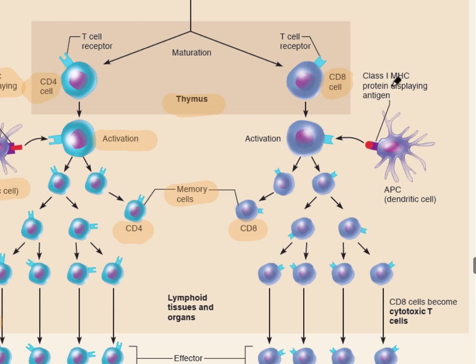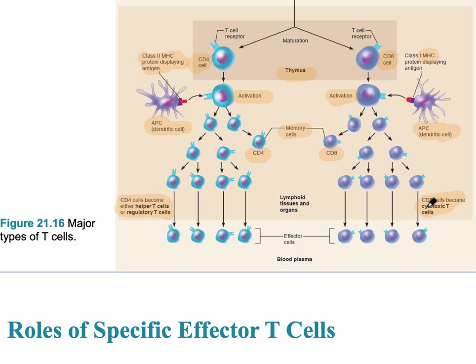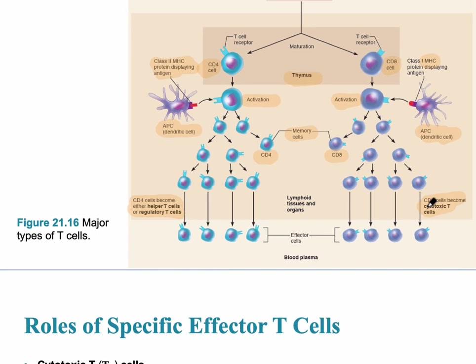Over here on the right, there's an MHC protein displayed by the antigen. The antigen presenting cell — the dendritic cell — is displaying this antigen to the lymphocyte, and now it's activated — it's no longer naive. It then develops into a CD8, which is a cytotoxic T-cell. Those are the different types of T-cells.